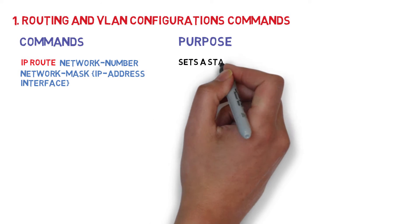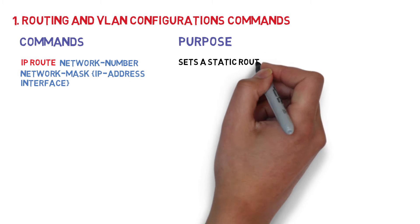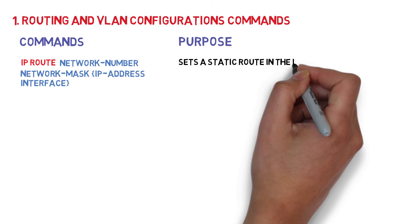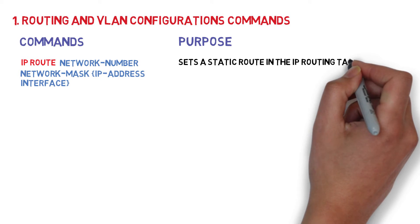IP route — network number, network mask, IP address, interface. Sets a static route in the IP routing table.